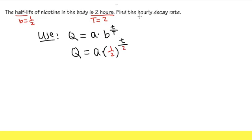Now pay attention to what the question is asking. It says we want to find the hourly decay rate. Whenever the question is asking us for the rate, especially the hourly decay rate, this means we want the equation to be Q equals a times (1 + r) raised to the t's power.